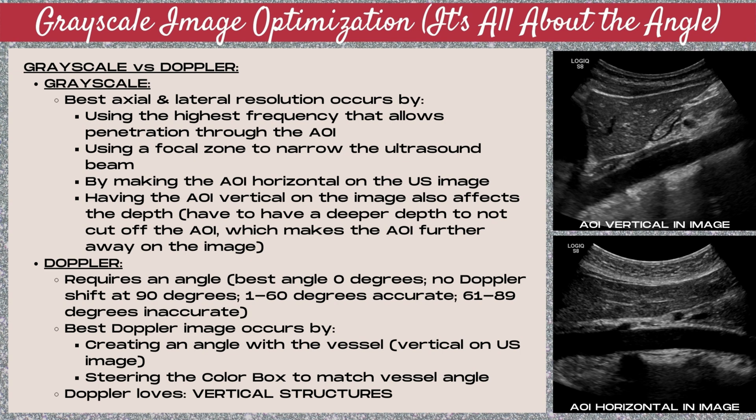Also, if we have a grayscale structure that's more vertical on the image, this affects our ability to optimize depth properly. You have to have a deeper depth to avoid cutting off the bottom portion of the area of interest when a structure is vertical on the screen, which makes the area of interest further away on the image.